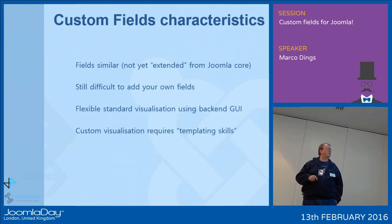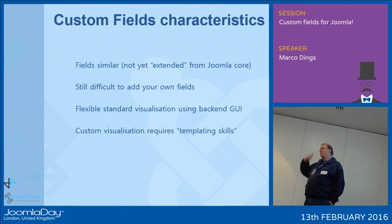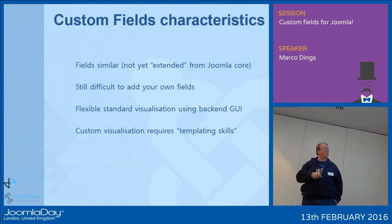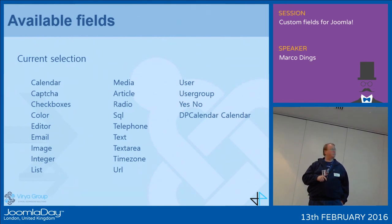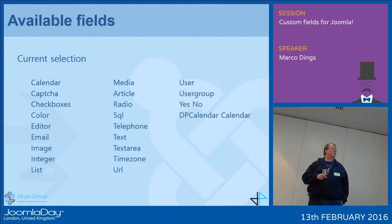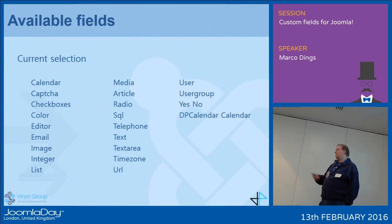It has flexible, standard visualization using the backend GUI — there are basically three ways of visualizing, which we'll come back to. That's easy but limited, or you can do custom visualization using your template and skills. What kind of fields do we have at the moment? It's quite a long list: calendar, CAPTCHA, checkboxes, color, a basic editor field, email, image, media field, article reference, radio button, SQL, phone number, text, text area, URL, user, user group, yes/no, DP calendar. Quite a number of fields, and more are being added.